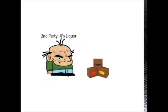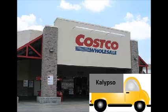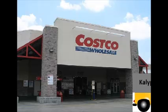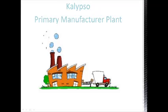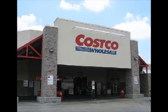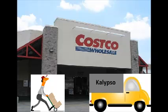After some time, JJ's Liquor starts running out of inventory, so it revisits Costco to buy more cases of Calypso. Costco then needs to order more Calypso from its primary manufacturer. Finally, the primary manufacturer sends inventory of Calypso back to Costco, the supply chain continues, and everyone is happy.